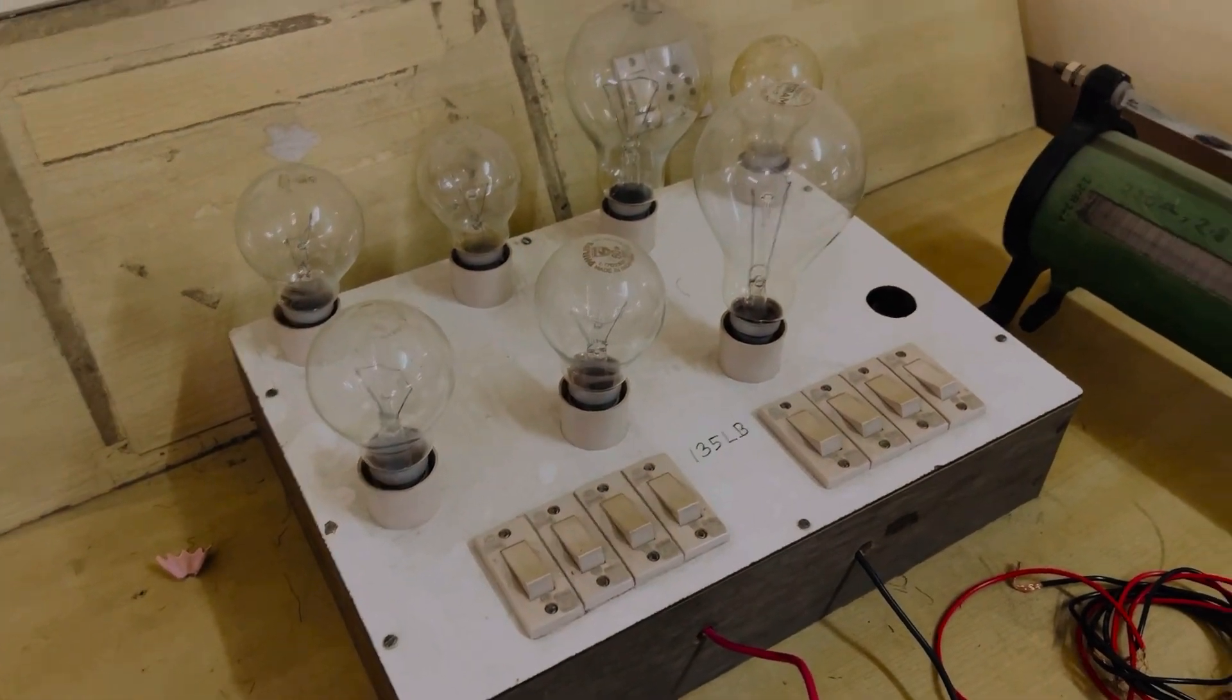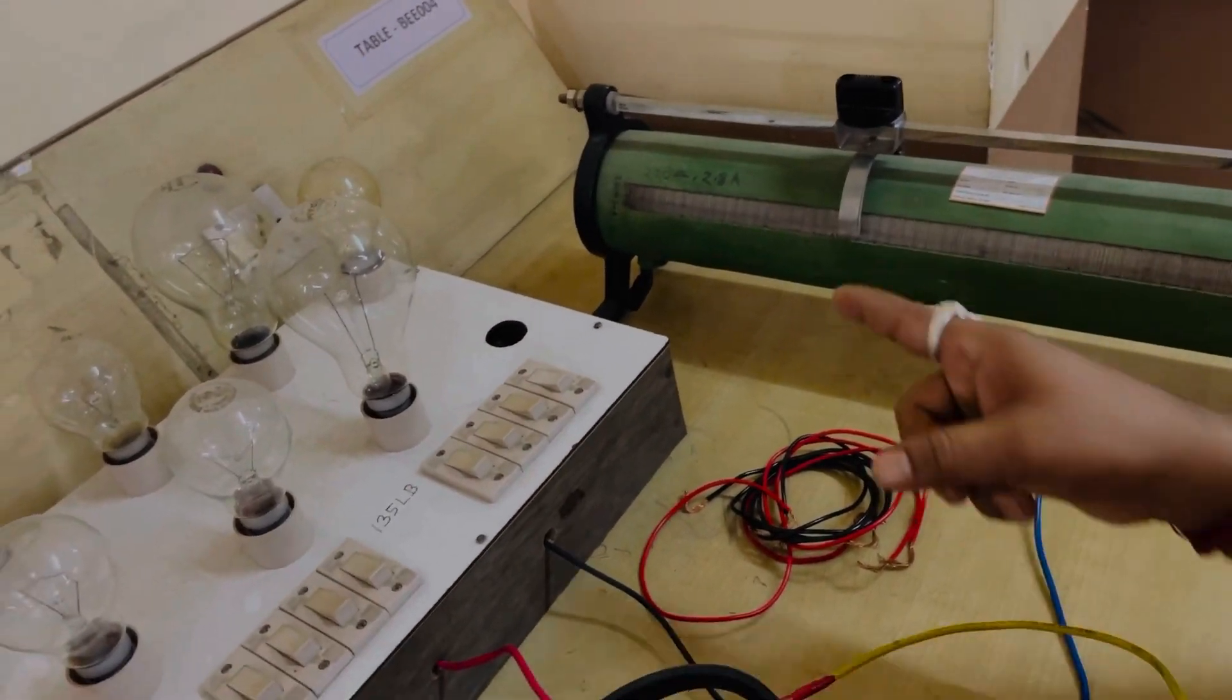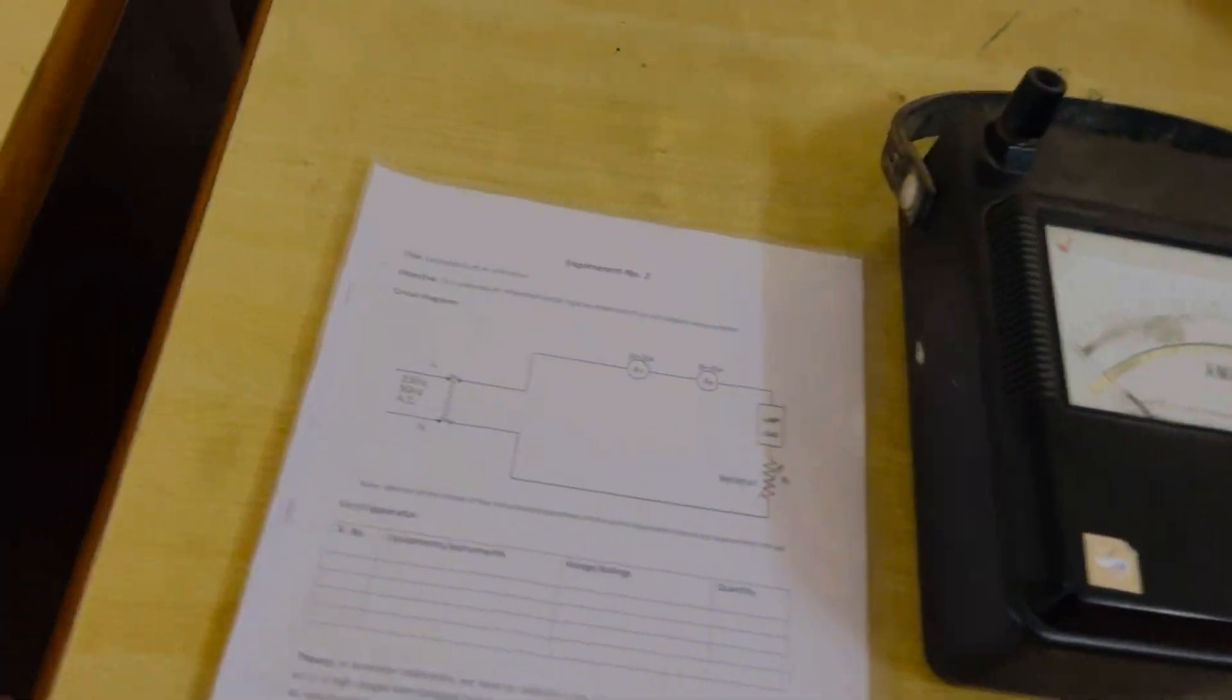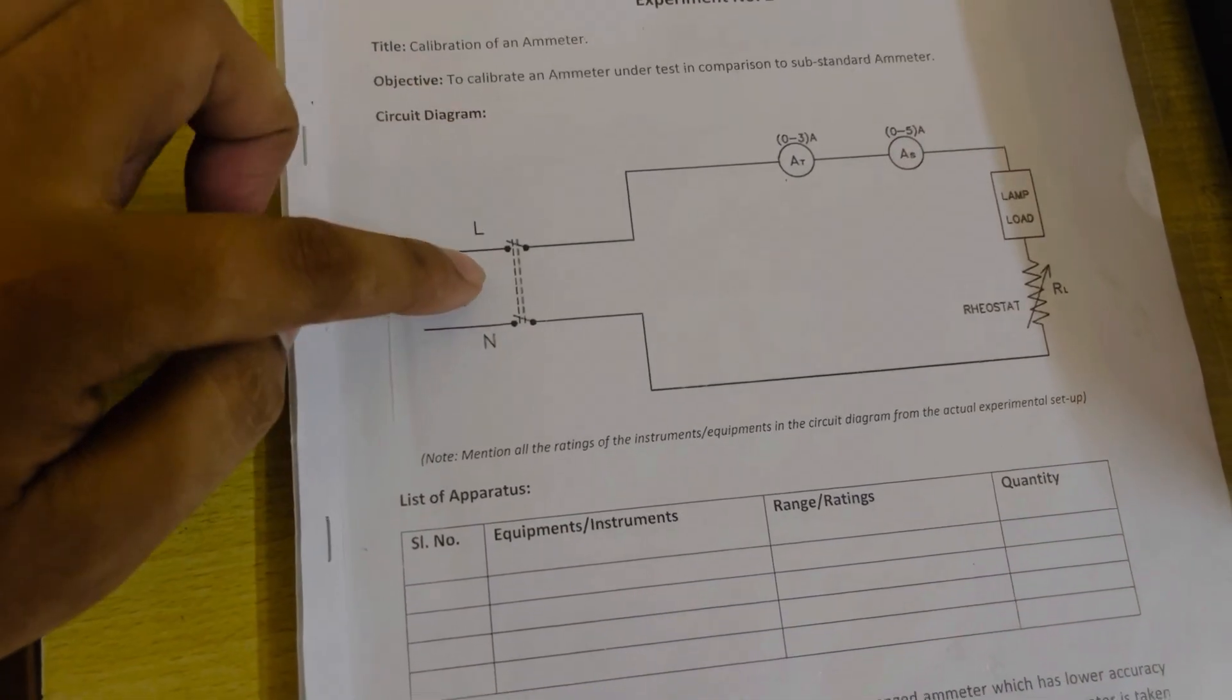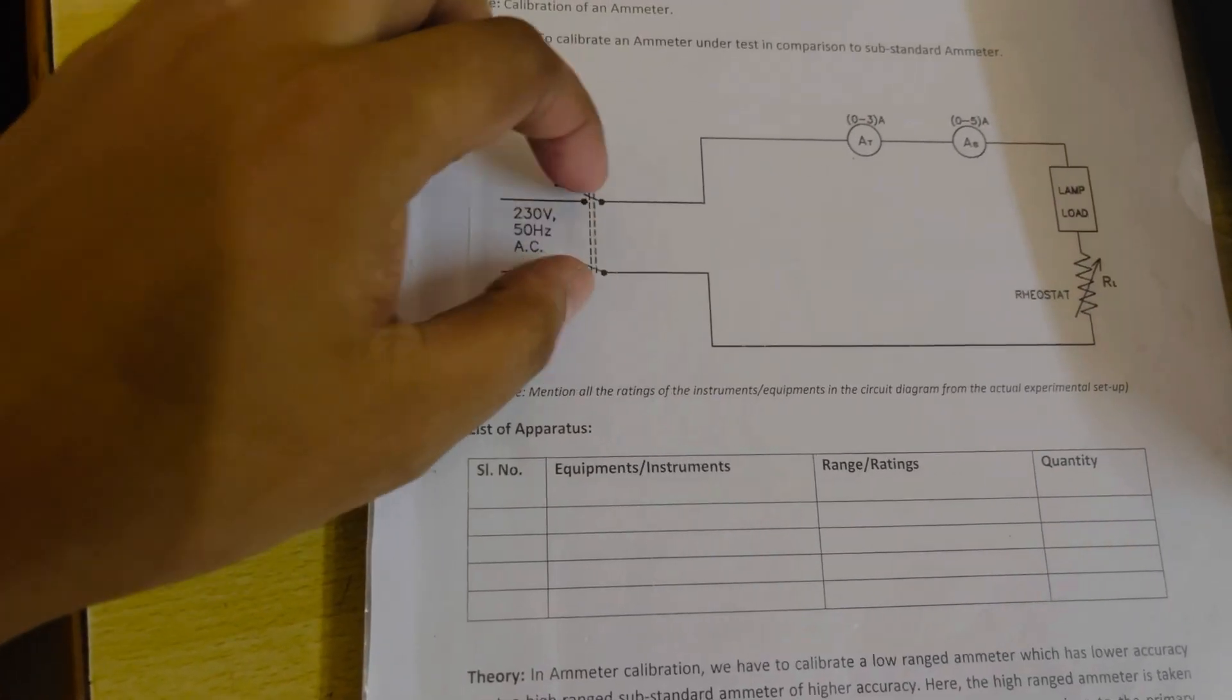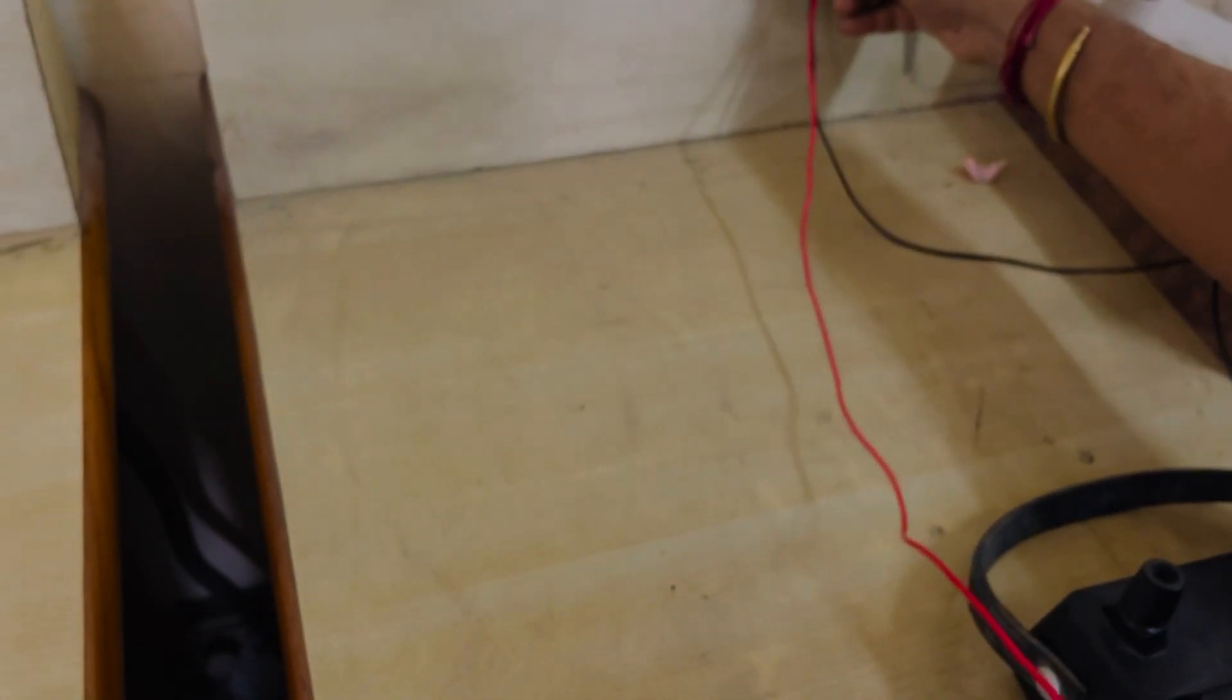We need one lamp load and one rheostat with a value of 220 ohms, plus some wires. See the circuit - this is the supply voltage. This is the supply, and the first way to connect...